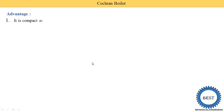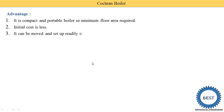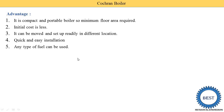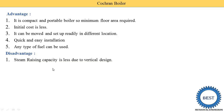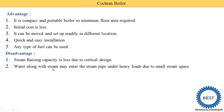The advantages of the Cochrane Boiler are: it is compact and portable, requiring minimum floor area; initial cost is less; it can be moved and set up easily in different locations; and any type of fuel can be used for combustion. The disadvantages are: steam rising capacity is less due to the vertical design, meaning lower steam is produced; water along with steam may enter the steam pipe under heavy loads due to small steam space; and efficiency is poor in smaller sizes.